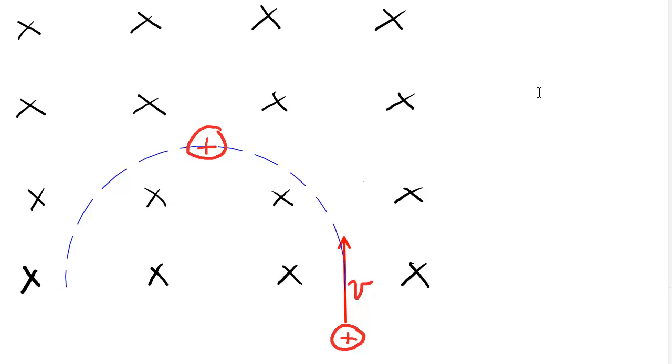The charge will be moving to the left with a velocity v, as shown. The velocity will be at a tangent to the blue semicircular path at this point. This is our velocity here.